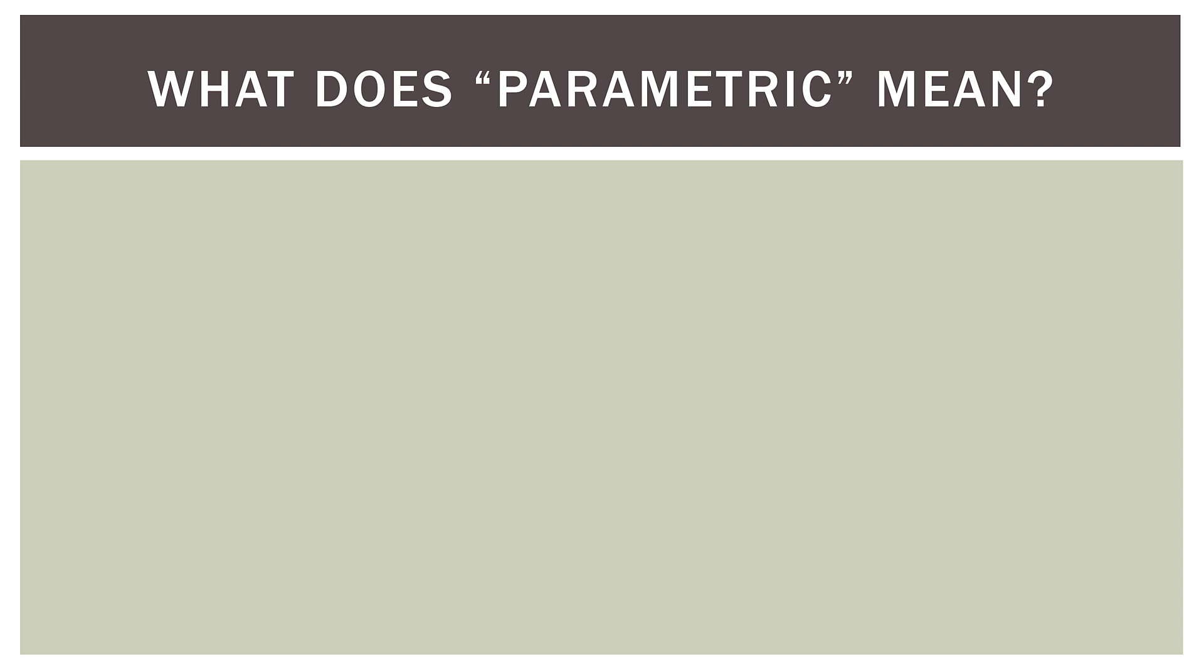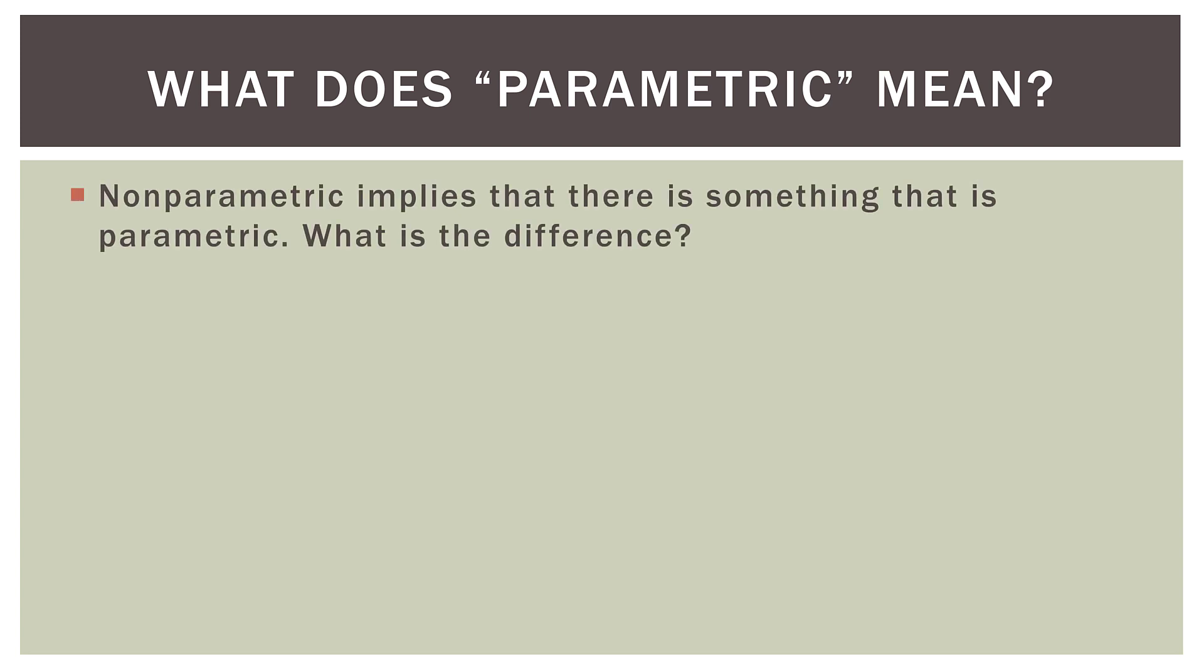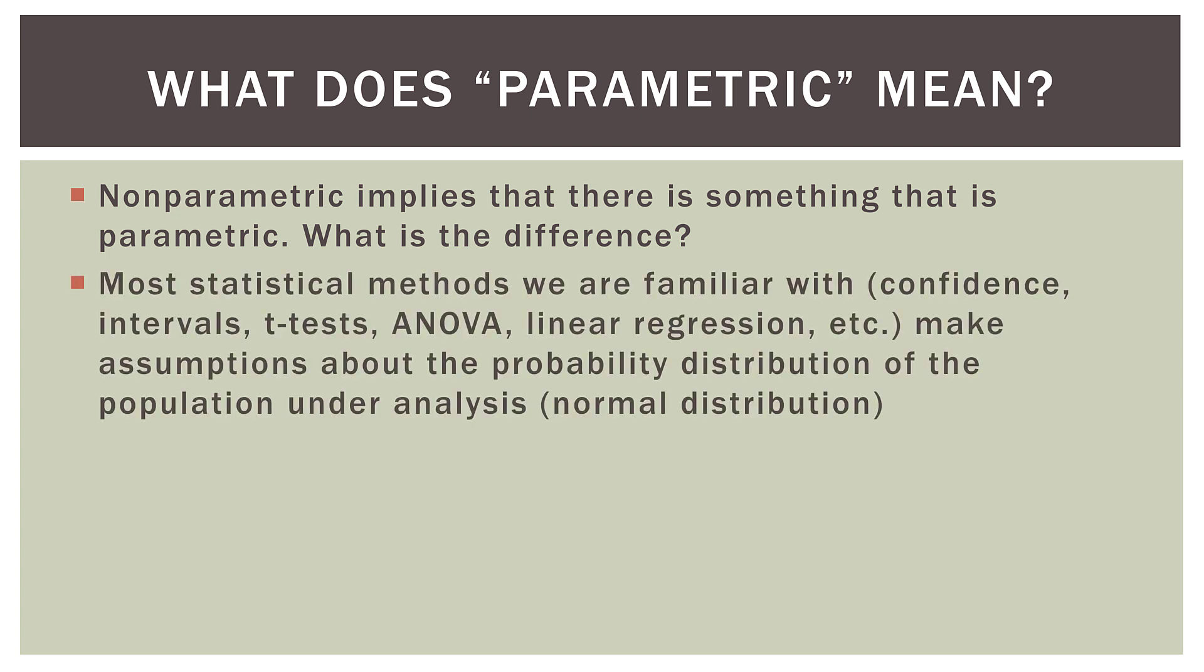So we know this series is about non-parametric methods, but what does parametric mean? Now non-parametric implies that there is something that is parametric. What is the difference between the two? Now most statistical methods we are familiar with, say confidence intervals, t-tests, ANOVA, linear regression, etc., make assumptions about the probability distribution of the population under analysis. Often that's a normal distribution.